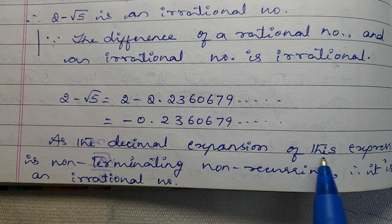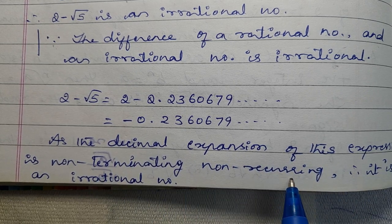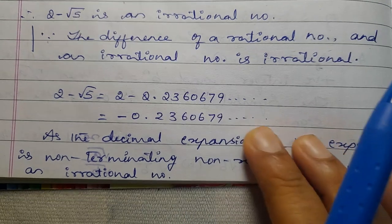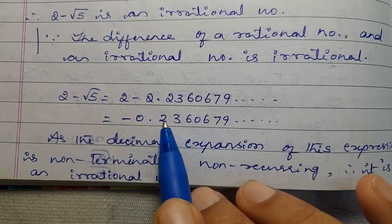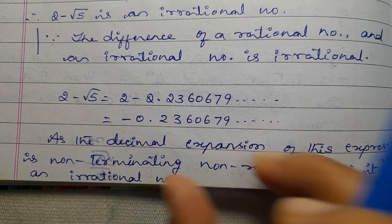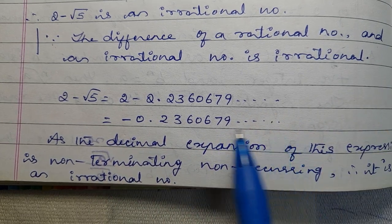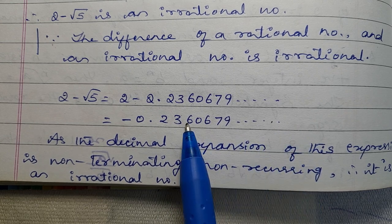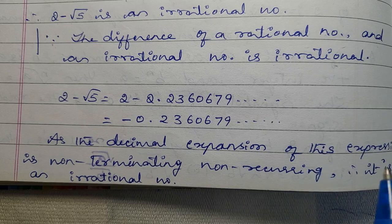As the decimal expansion of this expression is non-terminating, non-recurring, therefore it is an irrational number. So this is irrational.